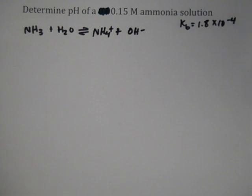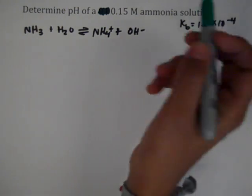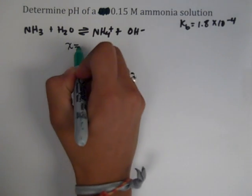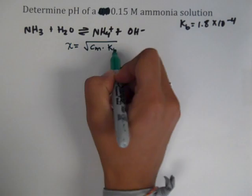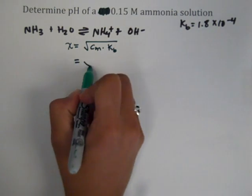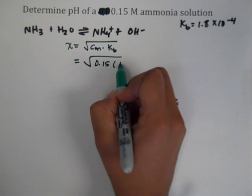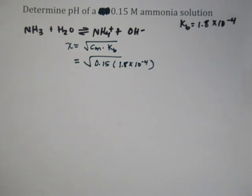I'll use the shortcut method since our K is relatively small and we have a large concentration. X equals the square root of concentration times Kb, which is the square root of 0.15 times Kb.